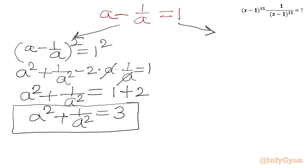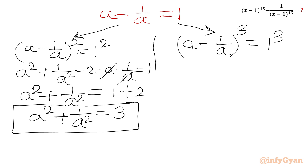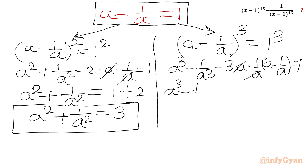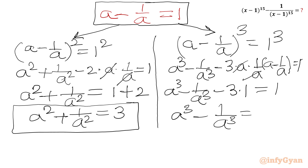Now I will cube both sides of A minus 1 over A equal to 1. Applying the (a minus b) cubed formula: A cubed minus 1 over A cubed minus 3 times A times 1 over A times (A minus 1 over A) equal to 1 cubed. Cancelling A, and substituting A minus 1 over A equal to 1, we get A cubed minus 1 over A cubed minus 3 equal to 1, so A cubed minus 1 over A cubed equals 4.